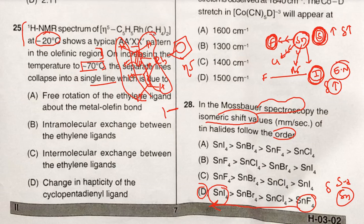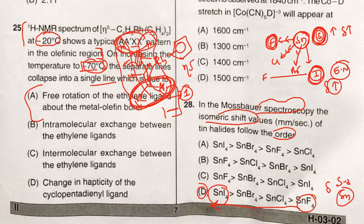But when the temperature increases to 70°C, these olefins can rotate freely, and the hydrogens can rotate freely. They cannot be distinguished - they will be considered as same chemical environment. That's why they will show only one single line. So option A is the correct answer: free rotation of the ethylene ligand takes place about the metal-olefin bond whenever temperature is increased from -20°C to approximately 70°C.